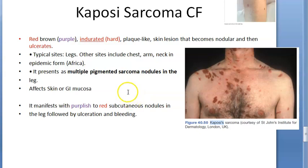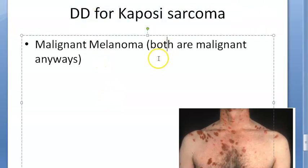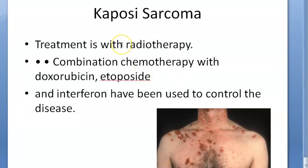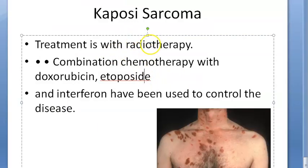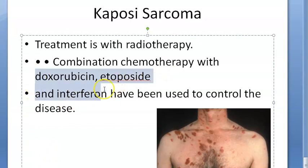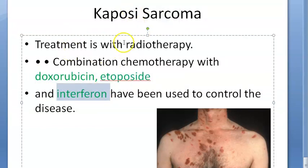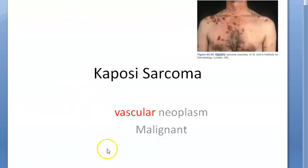The differential diagnosis for Kaposi's sarcoma is malignant melanoma and vice versa — both are malignant. Malignant melanoma caught early has a good prognosis, but late-stage gives a very painful death. Kaposi's sarcoma: the AIDS-associated and African types are bad, but the classic type is not so bad. Treatment includes standard radiotherapy and chemotherapy — doxorubicin, etoposide, and interferon have been tried to control the disease.